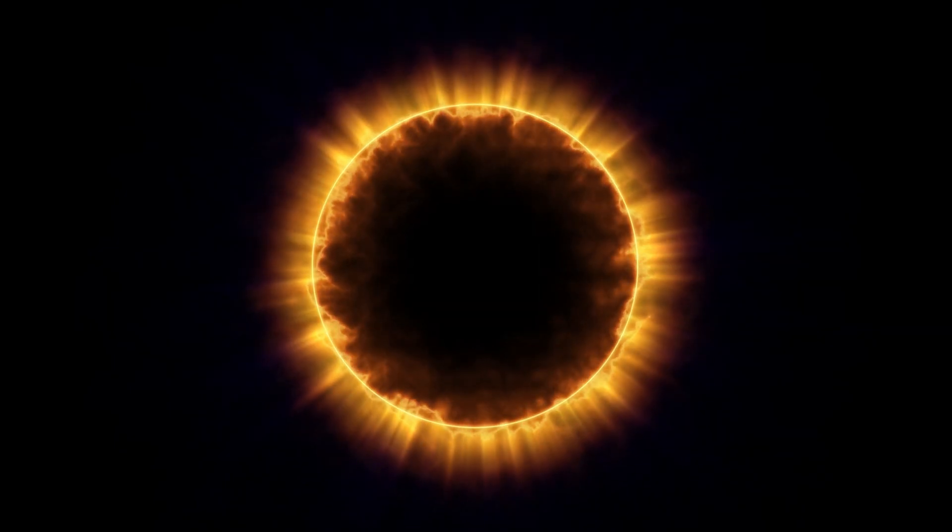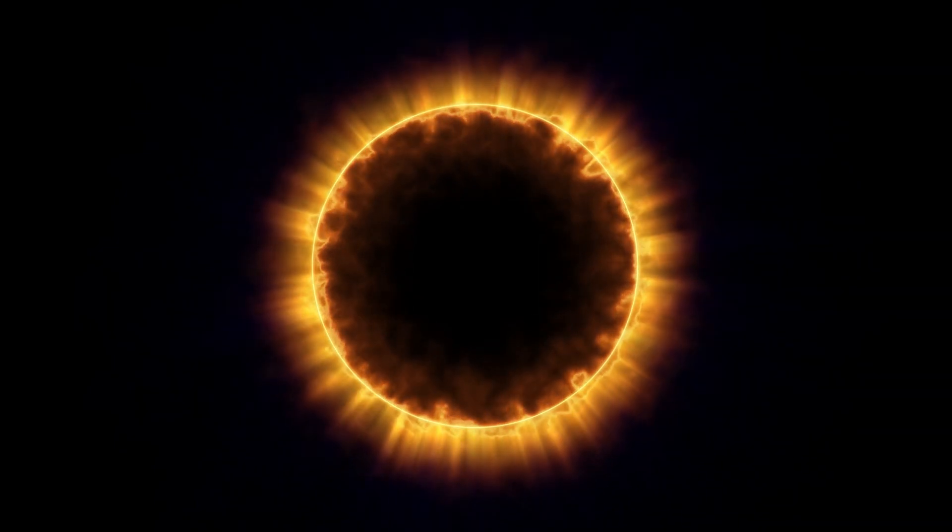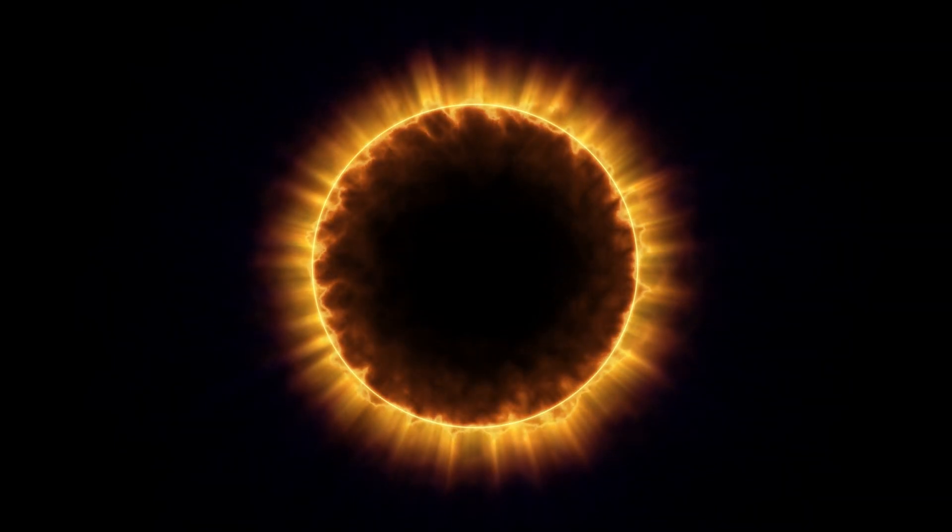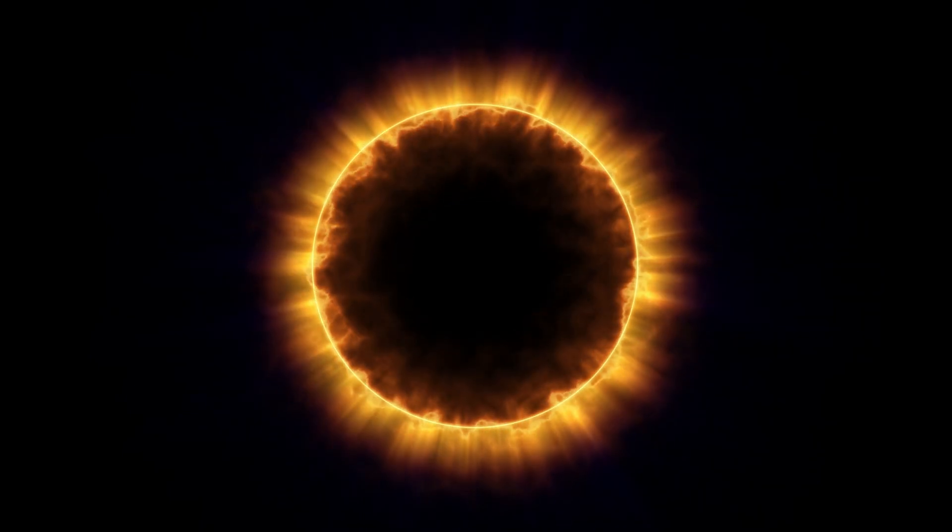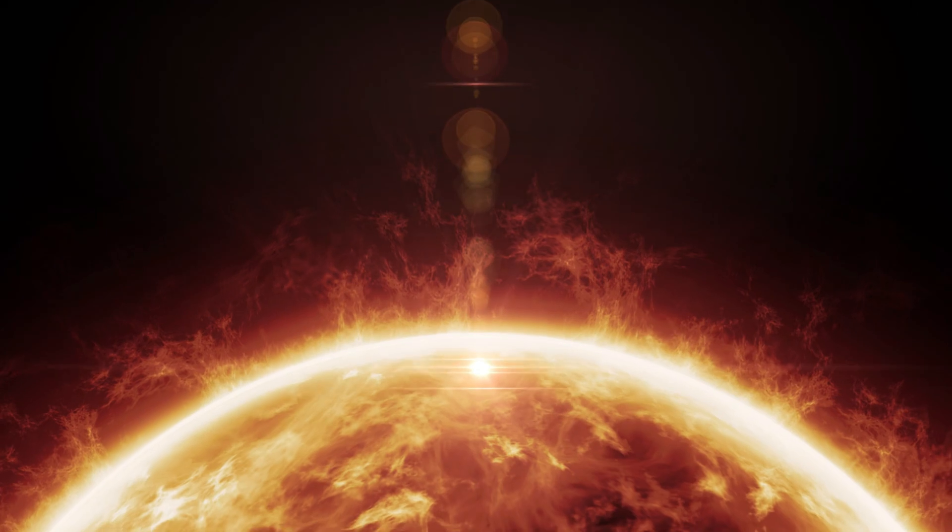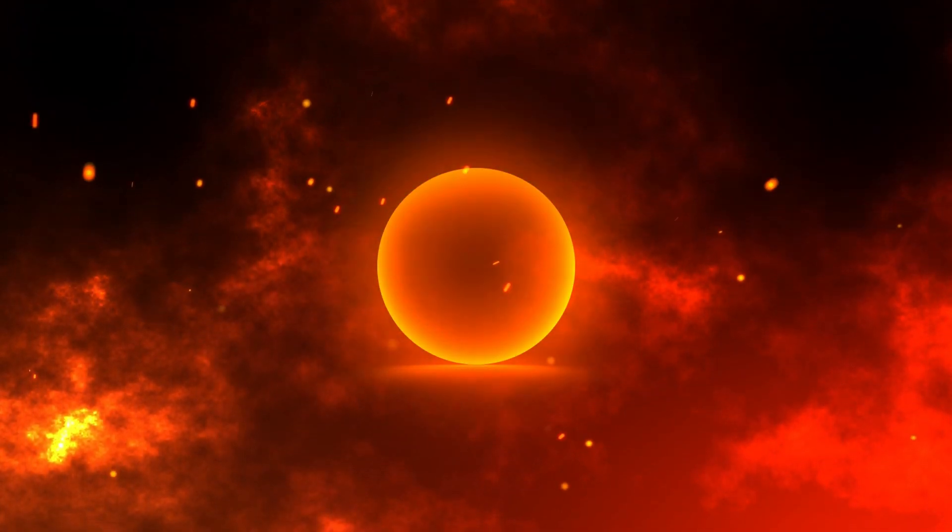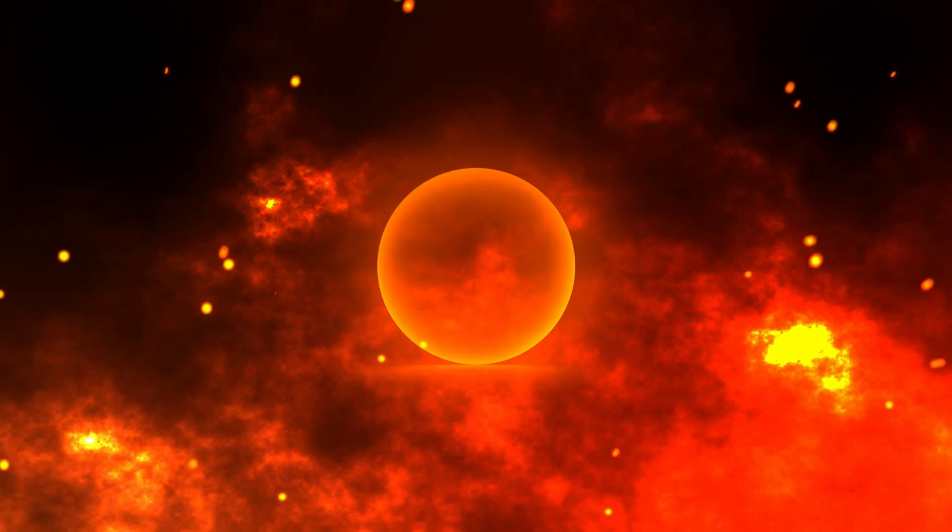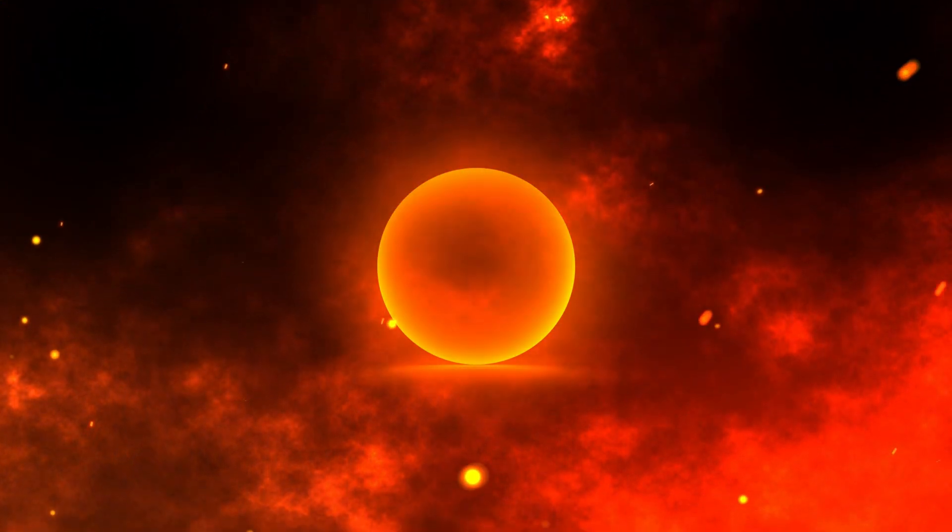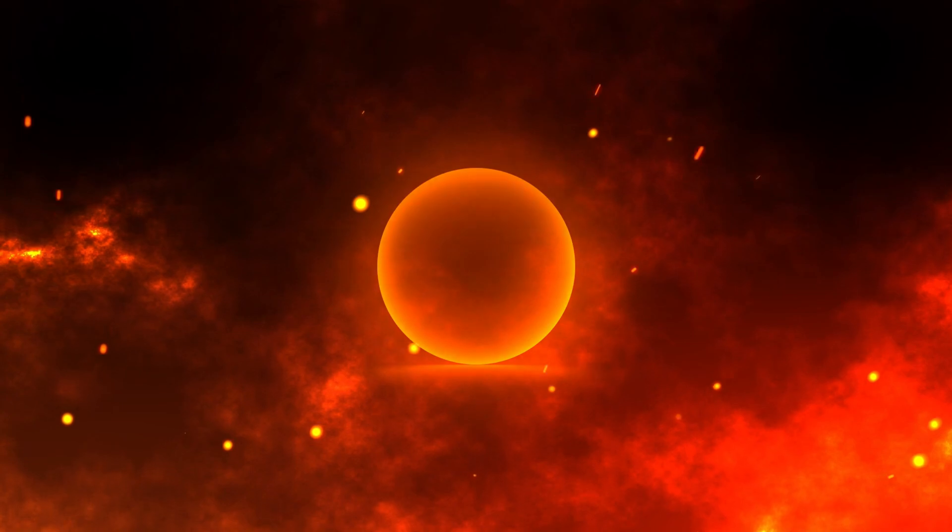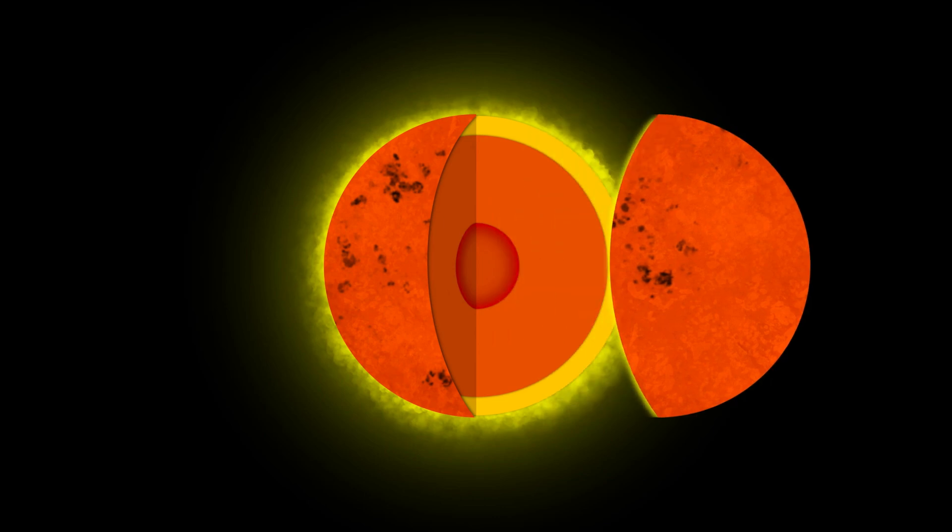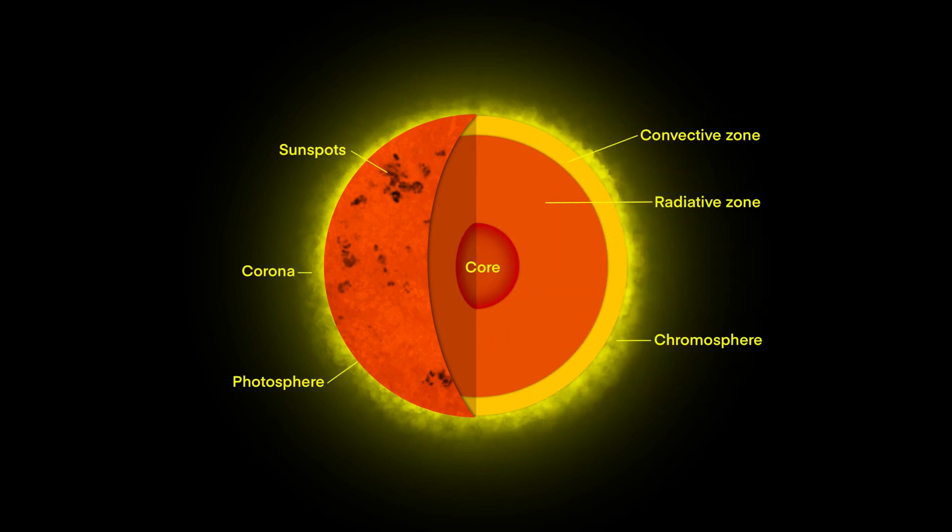As we enter this period of solar maximum, one important question looms: does solar activity contribute to global warming? The short answer is no. While there is a slight increase in solar radiation during solar maximum, the effect on Earth's overall temperature is minimal. Studies have shown that variations in solar activity have had little to no impact on global warming over the past few decades. Global temperatures have continued to rise, driven by human-caused factors like greenhouse gas emissions rather than solar fluctuations.